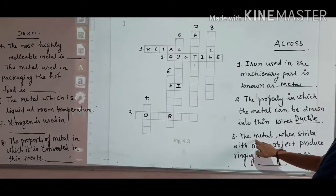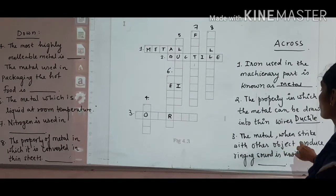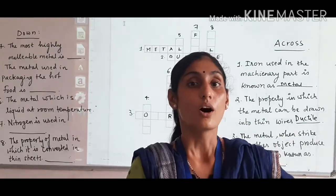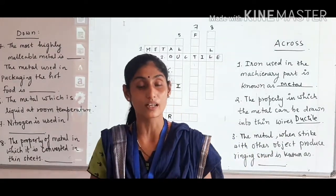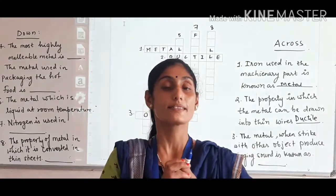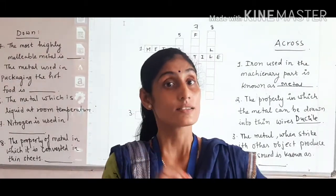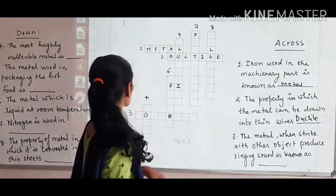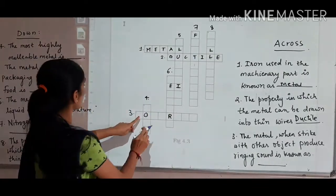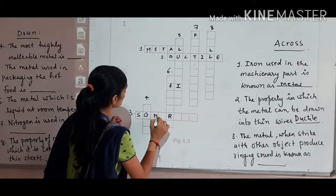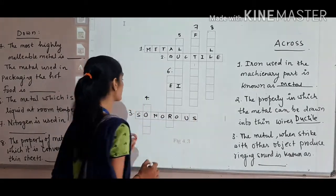When you talk about metals striking other objects, they produce sound. The metal object, when it strikes with another metal, the property has been mentioned which is sonorous. This property is known as sonority. Metals when struck produce sound, so this property is called sonority.